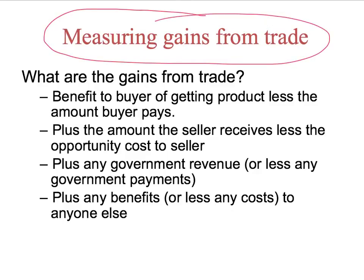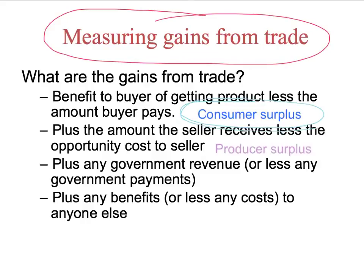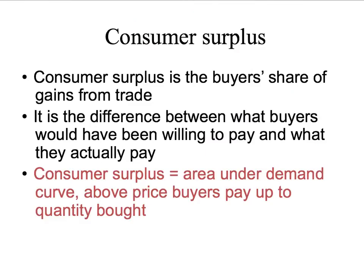We've been looking at the benefits to the buyer and the benefits to the seller. In other words, we've been looking at the gains to the buyer, which is called consumer surplus, and the gains to the seller, which is called producer surplus. We know that consumer surplus is the buyer's share of the gains from trade — it's the difference between what buyers would have been willing to pay and what they actually have to pay.